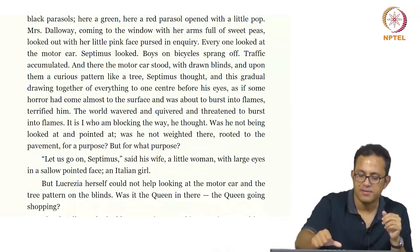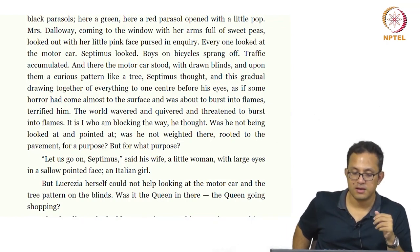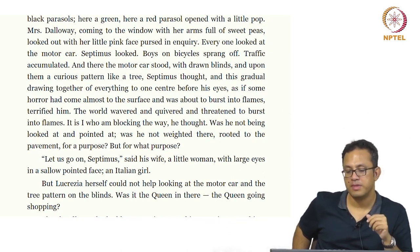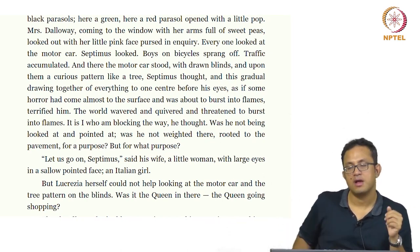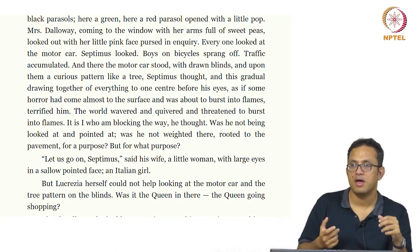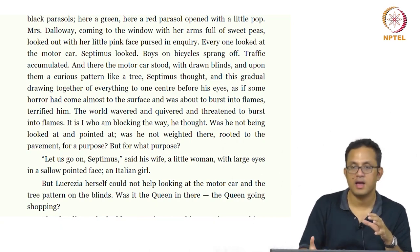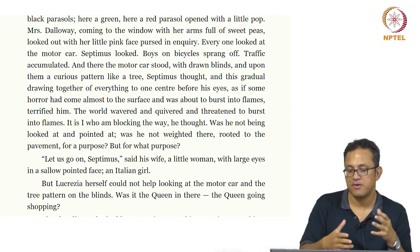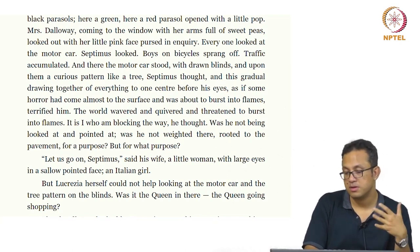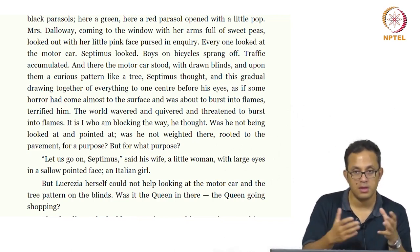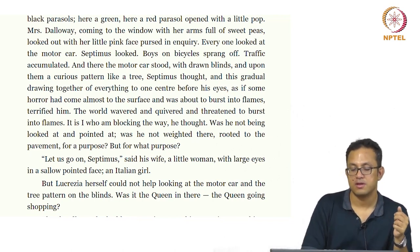'Septimus,' said his wife, the little woman with large eyes and a sallow, pointed face — an Italian girl. It is also important to see how Septimus, a white British man, ends up marrying a non-British woman. He is married to an Italian girl, and it is interesting because Italy was not really an ally of England in the First World War. Their marital relationship therefore undercuts the political alliances of the time, showing how human relationships are formed despite political ones.